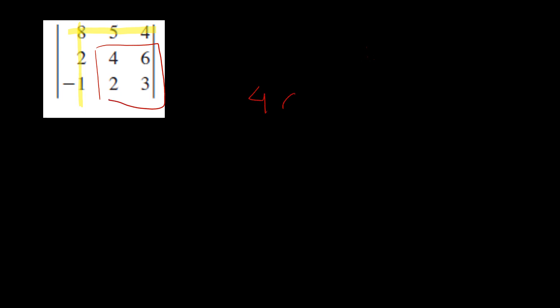Now let's find the determinant of this 3 by 3 matrix. For that, first we'll have to cross the first row and first column. So we cross the first column and the first row. Now what are we left with? We're left with this — we write it in here. So 4, 6, 2, 3, and the number in the first column goes in here. And for the next one, you'll have to put a negative — make sure you don't forget this negative. This is very important; many people forget this and end up getting a wrong answer.